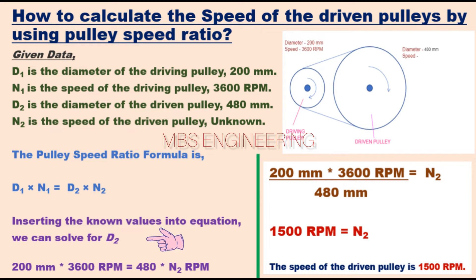Substituting the known values, we get 200 mm times 3600 revolutions per minute equals 480 mm times N2 revolutions per minute. Solving for N2...